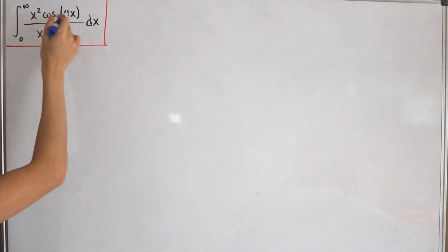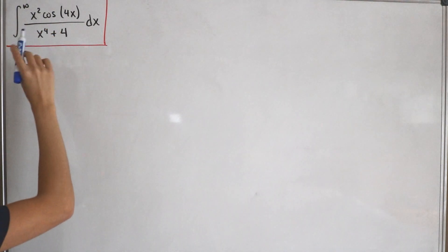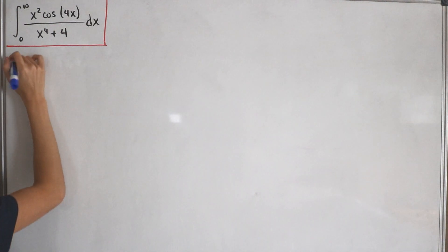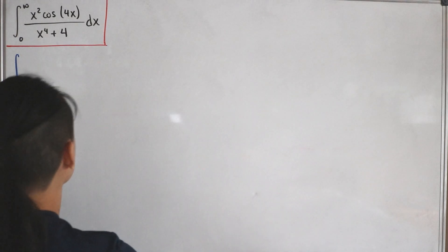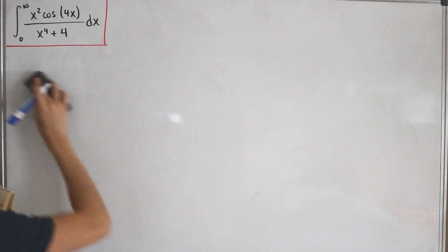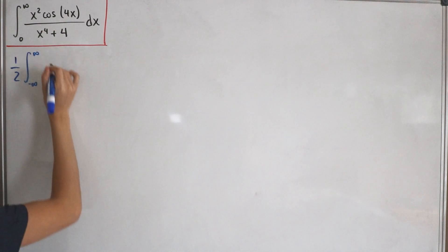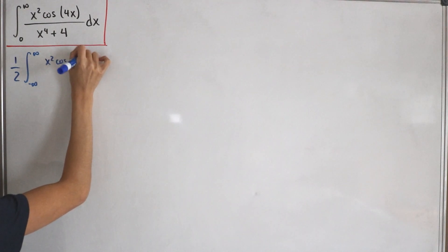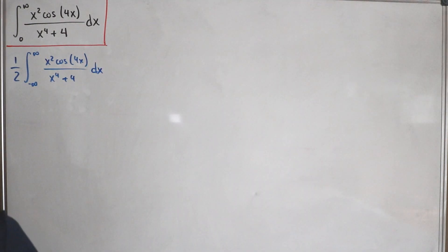Notice that our integrand, x squared cosine 4x divided by x to the power 4 plus 4, is actually an even function. So with symmetry, we can rewrite this integral as one half of the integral over the entire real line — from negative infinity to positive infinity of x squared cosine of 4x divided by x to the power 4 plus 4, dx.